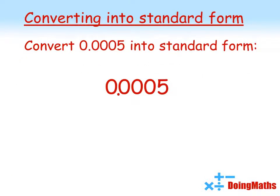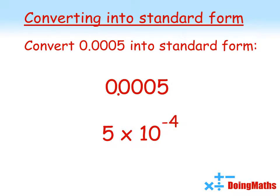So far we've looked at how we can convert large numbers into standard form. Now let's have a look at how to convert small numbers into standard form. Here we have 0.0005 — we're going to change that into standard form. The first step is exactly the same: we find the non-zero part, which is 5. We know we've got to times by 10 to the power of something. We look at how far we'd have to move the decimal point to go from 0.0005 to get to 5 — that's a distance of four decimal places. But we want to make 5 into a smaller number, so our power will be negative 4. These two are exactly the same thing, but because we're making 5 into a tiny number our power is negative.